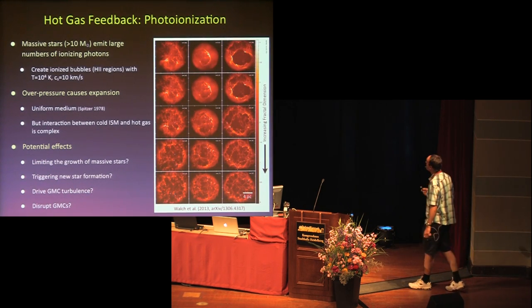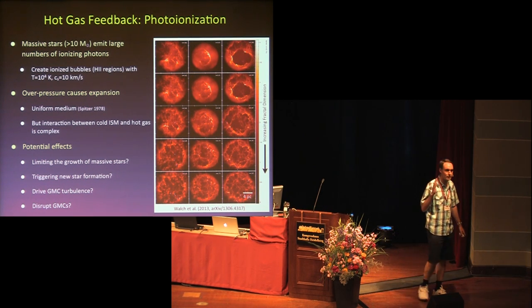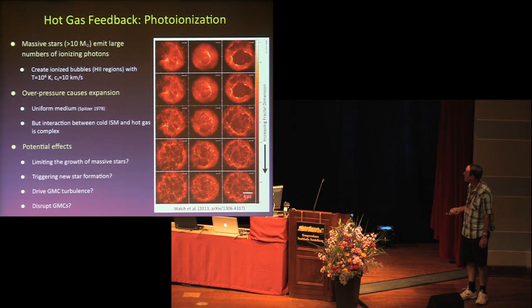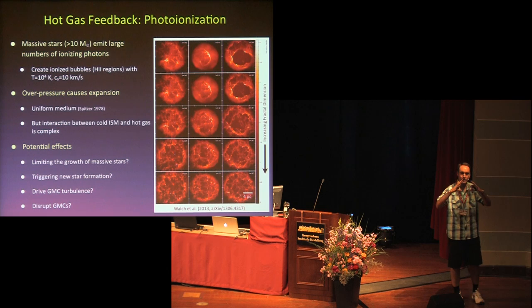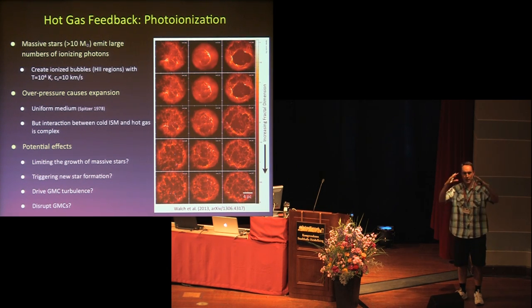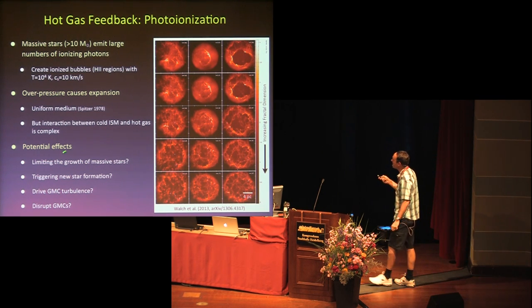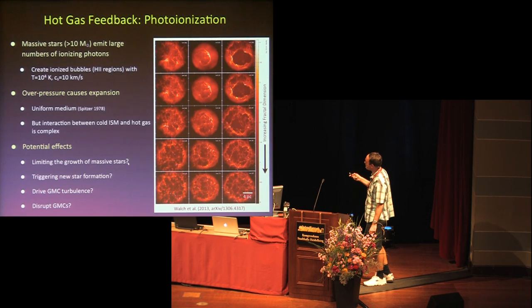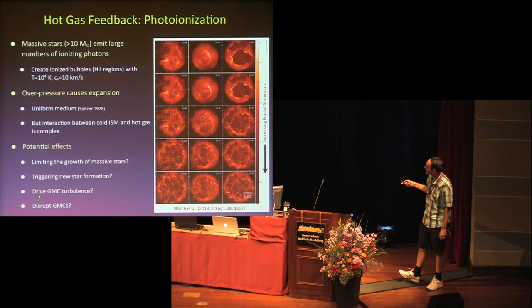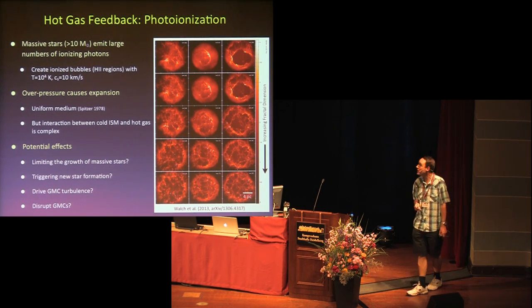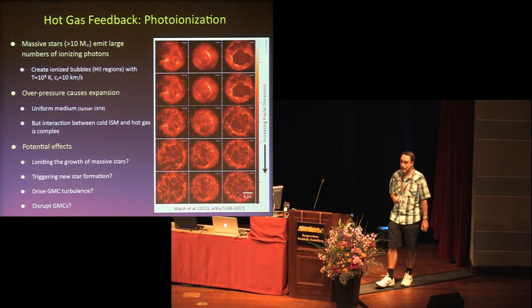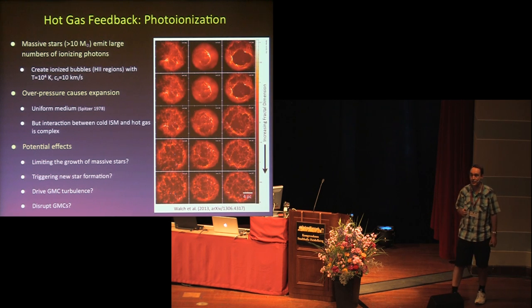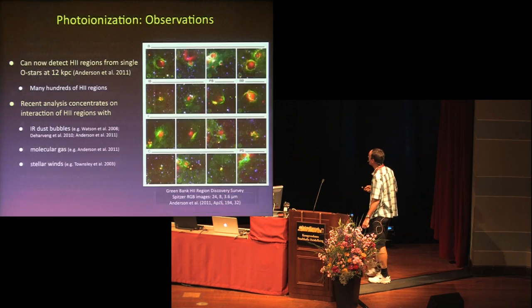Now on to photoionization. Whenever you have massive stars greater than about 10 solar masses, they emit lots of ionising photons, creating HII regions with typical temperatures of about 10^4 Kelvin and sound speeds of about 10 km/s. This over-pressured gas expands adiabatically into the molecular cloud and sweeps up shells of molecular material. Potential effects include limiting the growth of massive stars, triggering new star formation, and affecting giant molecular clouds — perhaps driving turbulence or disrupting them. Simulations by Steffi Walsh look at how the fractal distribution of clouds affects the way these HII regions destroy the clouds.